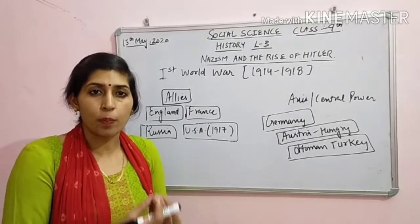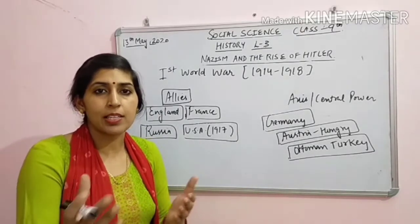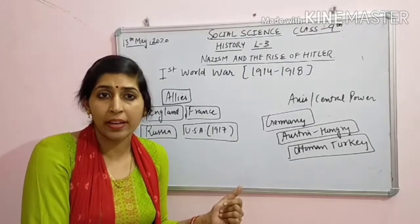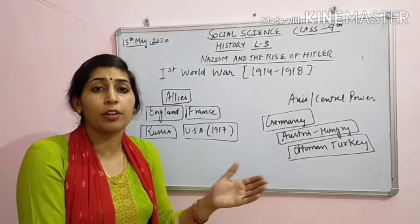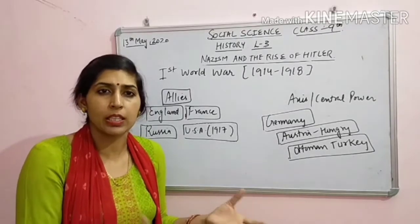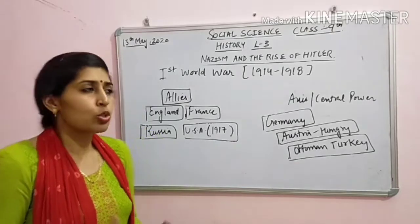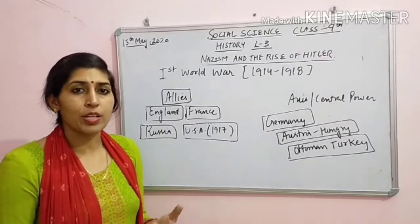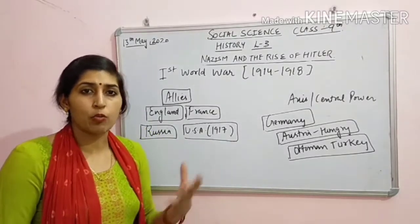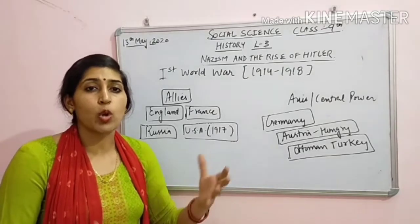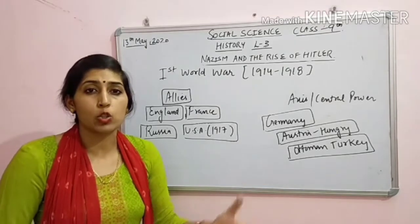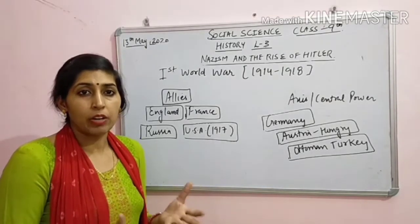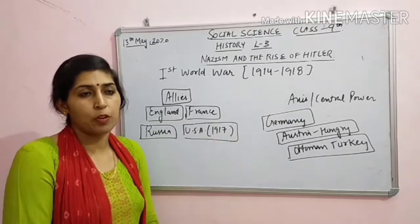Yahaan world war hota kya hai? Resources occupy karne ke liye, territory occupy karne ke liye - kisi bhi country hai woh doosri country ki territory ko occupy karna chahti hai, doosri country ko jeetna chahti hai resources ke liye. Toh ye main jo reason hai world war ke pichhe - resources ikhatta karna chahti hai country. Toh ye aapas mein world war hota hai.